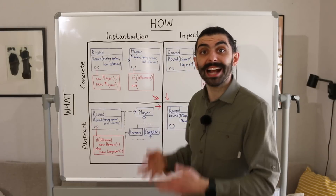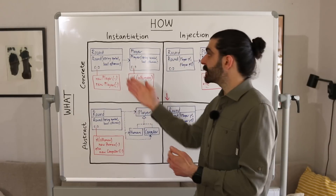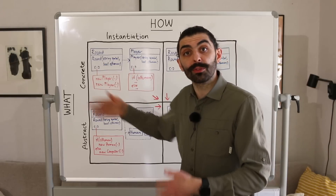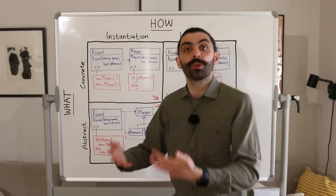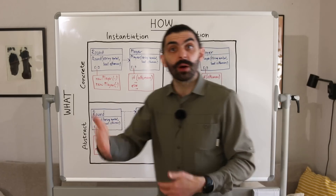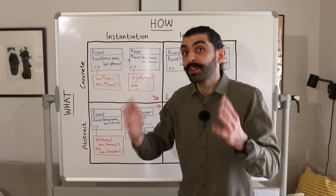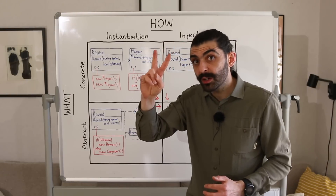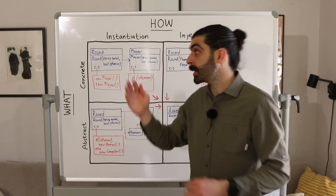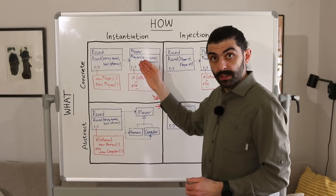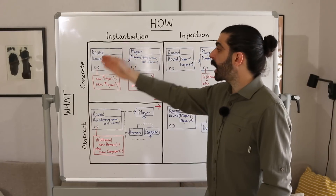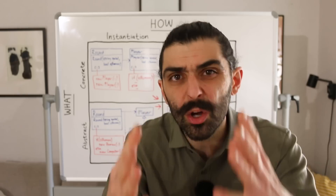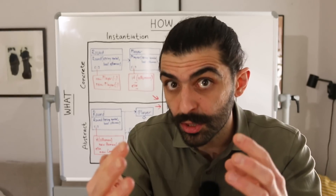So if you have a class like Round which has a variable of type Player, in the what dimension we ask what the compile-time type of the variable that holds the player is — is it abstract, as in an interface or an abstract class, or is it concrete like a class? And in the how dimension we ask how that player object ended up in the Round — was it Round that instantiated the player, or was it injected into the Round by someone else? So if the class Round has two variables of the concrete type Player and Round itself constructs these players, then we are up here in this quadrant. And I know that this might seem like the simplest solution, but it's actually very problematic.